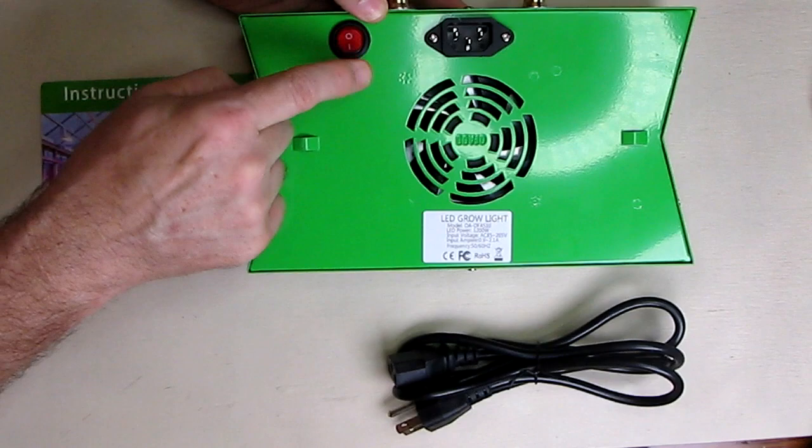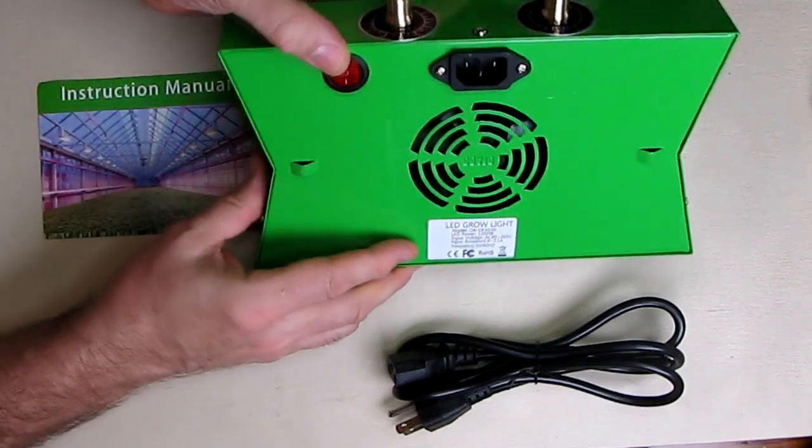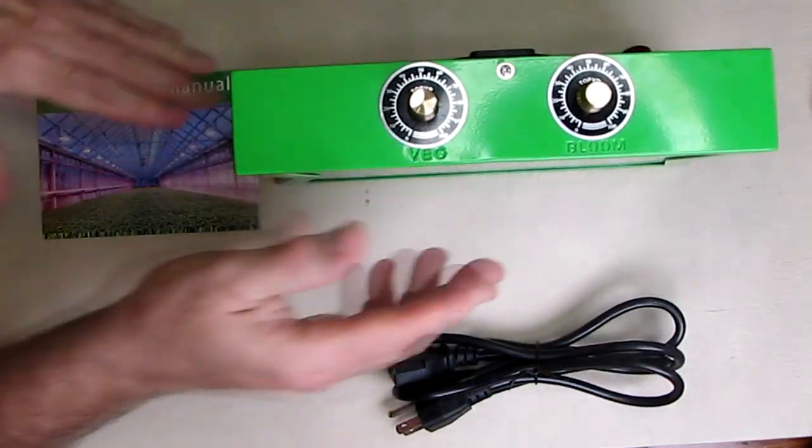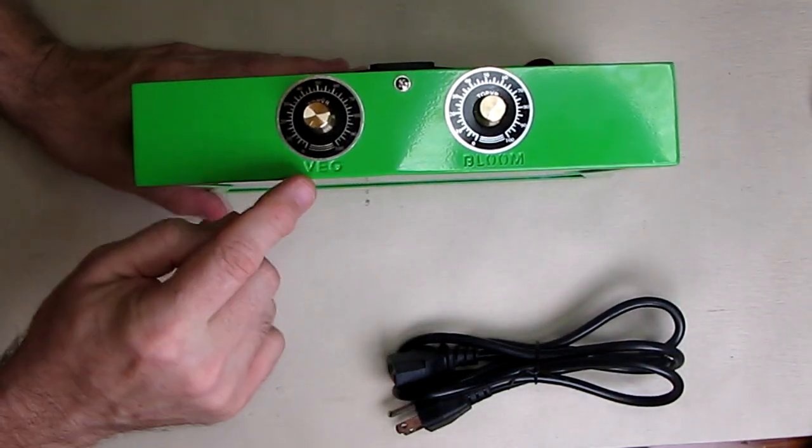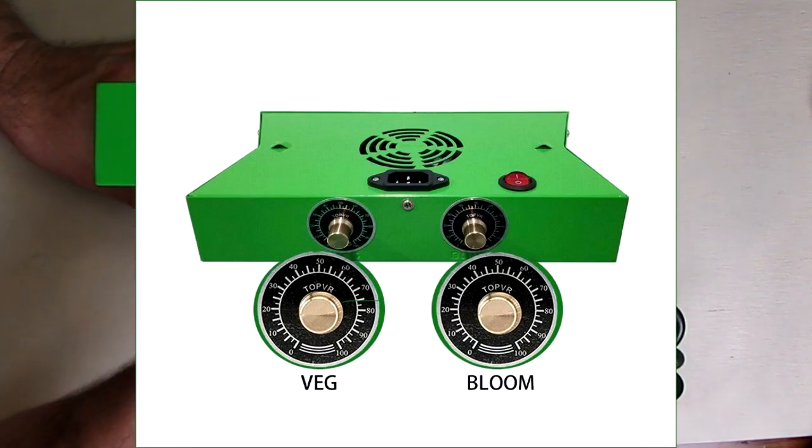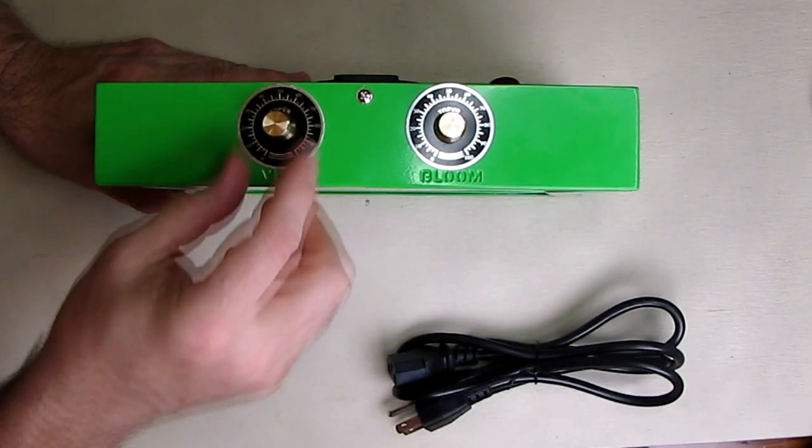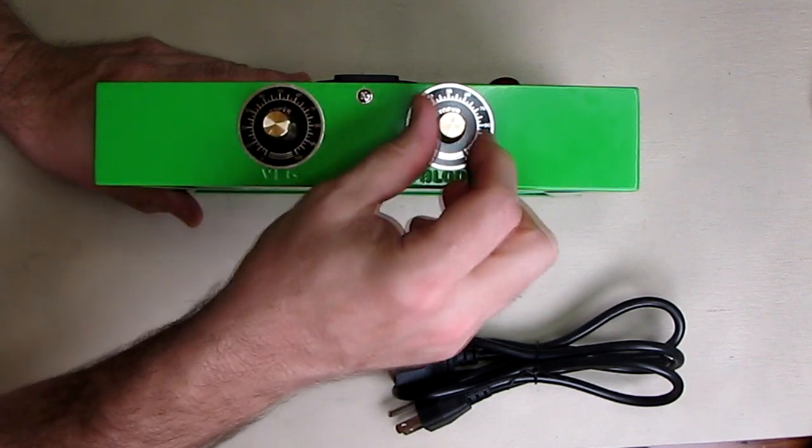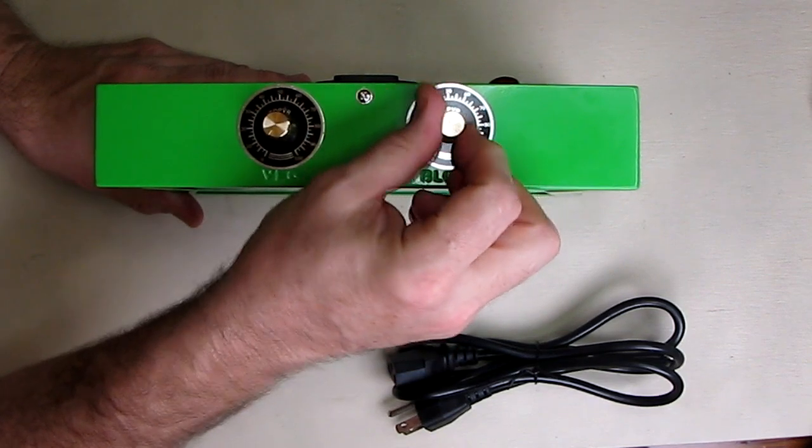Here's your main power switch on and off just right there. Then if you look at the top, you can see that you have a vegetable setting or veg and a bloom setting. Then it has numbers, it's all calibrated. Very nice control. You have a very simple method to control the light output.